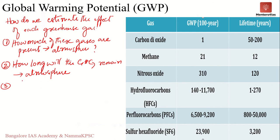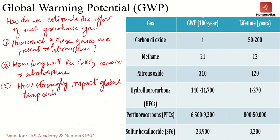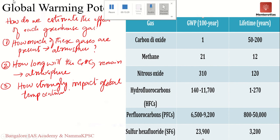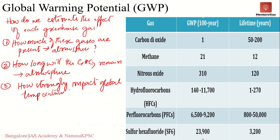Third: how strongly will the greenhouse gas impact global temperatures? Some gases are more effective than others at trapping heat re-emitted from the earth. For each greenhouse gas, a global warming potential is calculated based on how much energy it is able to absorb and how much energy it prevents from being re-emitted back into space.